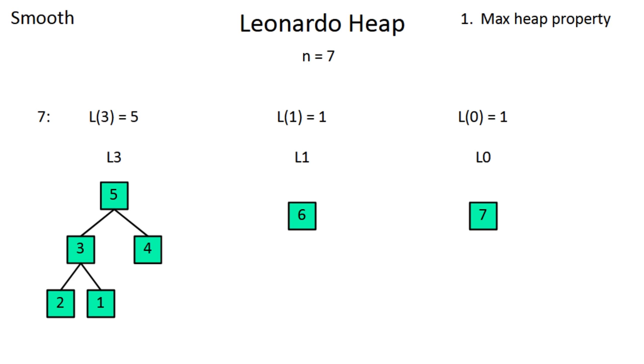Any positive integer can be expressed as a sum of distinct leonardo numbers, so a leonardo heap of size n is just a collection of leonardo trees where their sizes add up to n and they satisfy the following properties. Each node is greater than or equal to each of its children, the trees decrease in size, and the root nodes are in increasing order.